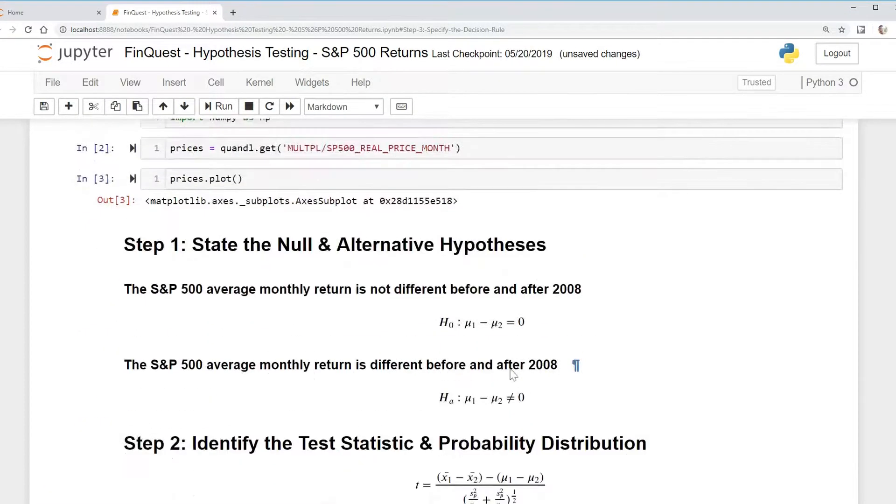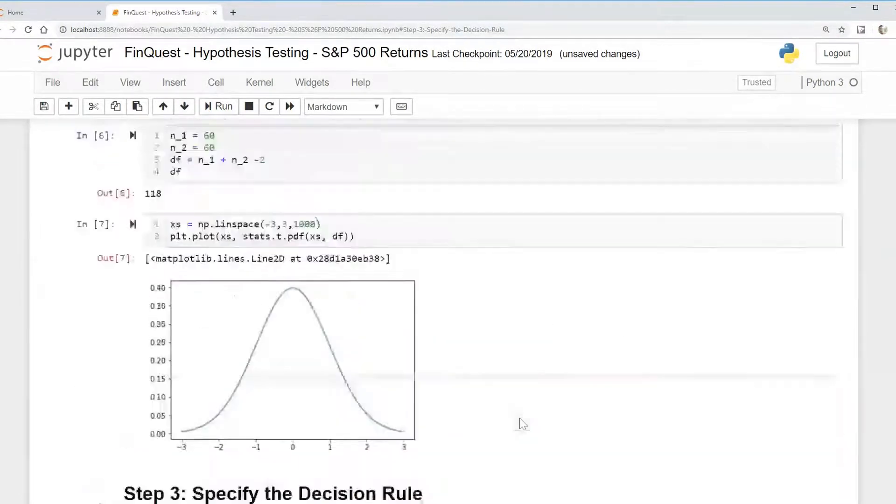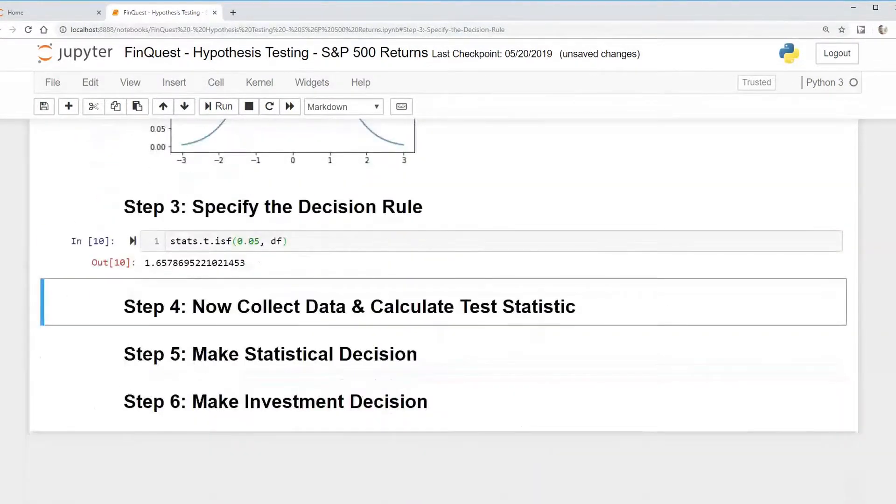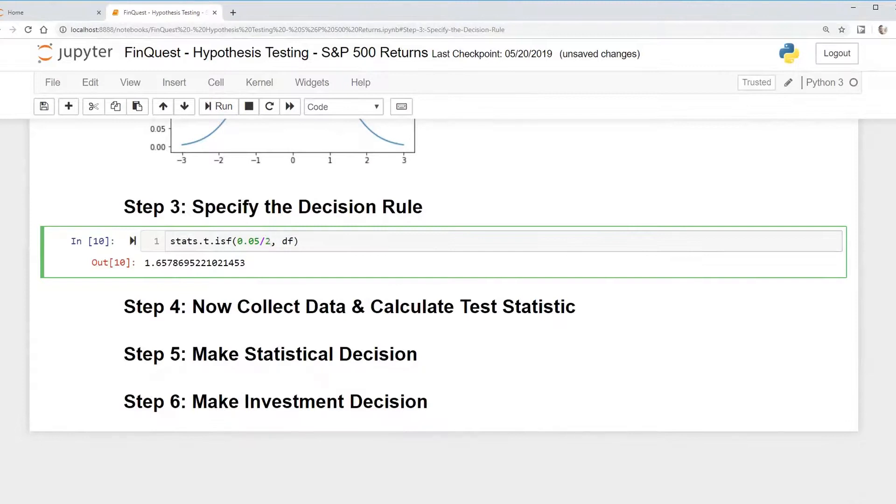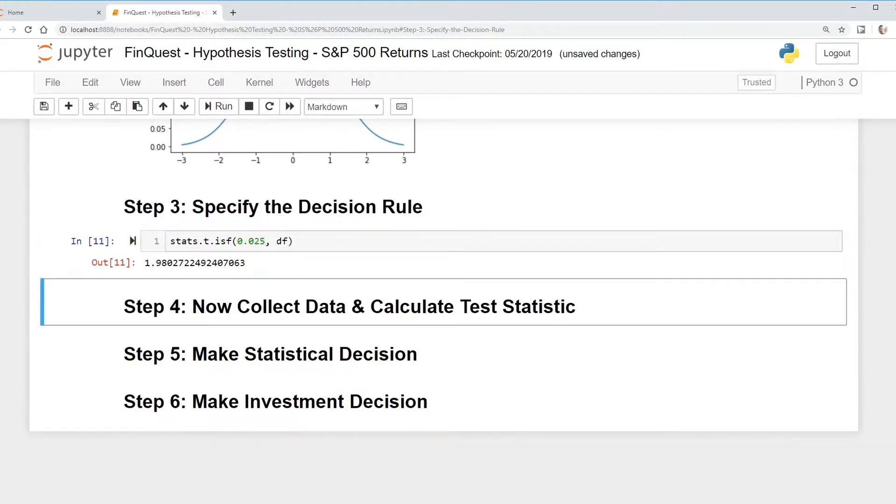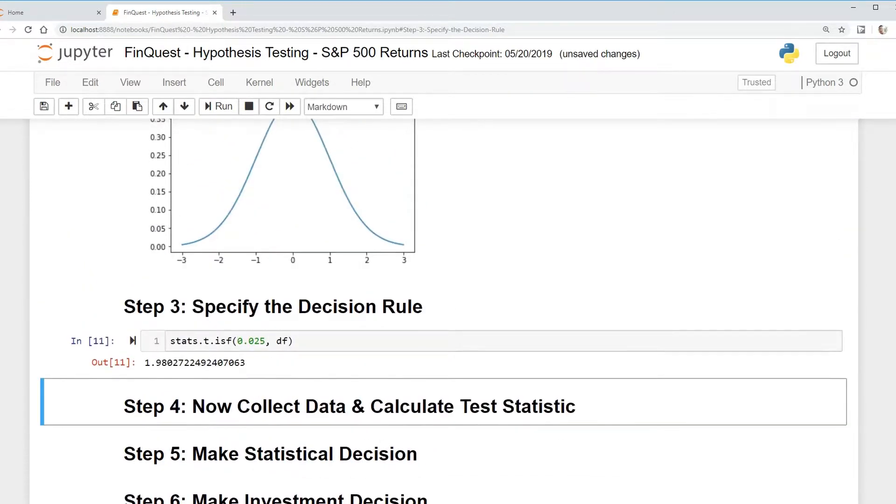So since we're doing a two-tailed test of equal zero and not equal zero, we need to divide this 0.05 by 2. So that's going to be 0.025 and that'll be 1.98 will be our rejection points. And so if our t-value or t-statistic is larger than 1.98 we can reject the null hypothesis.